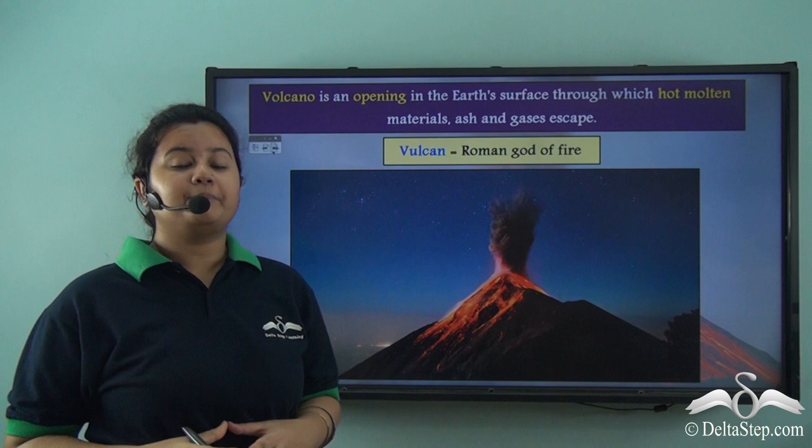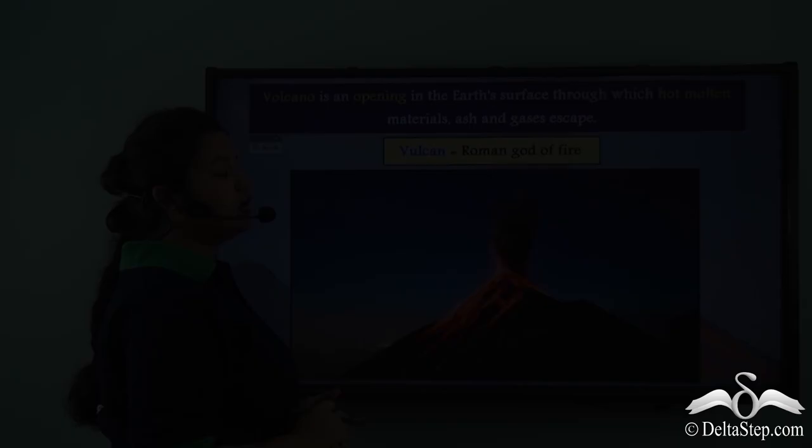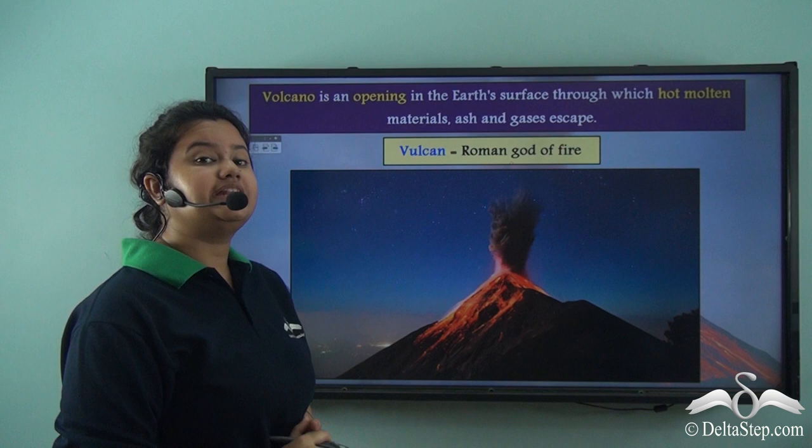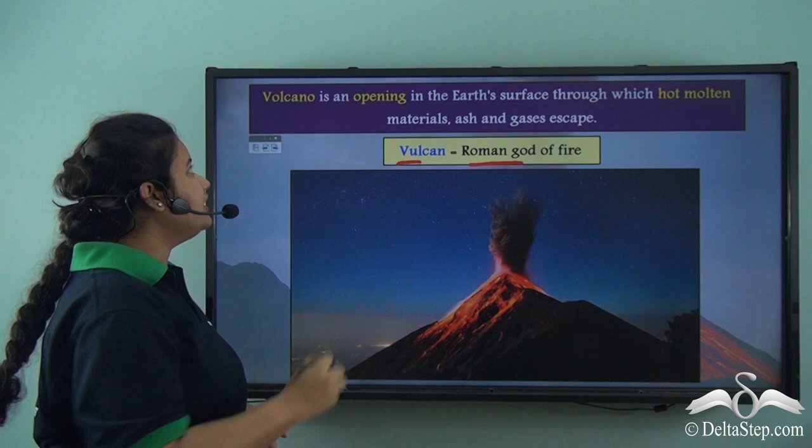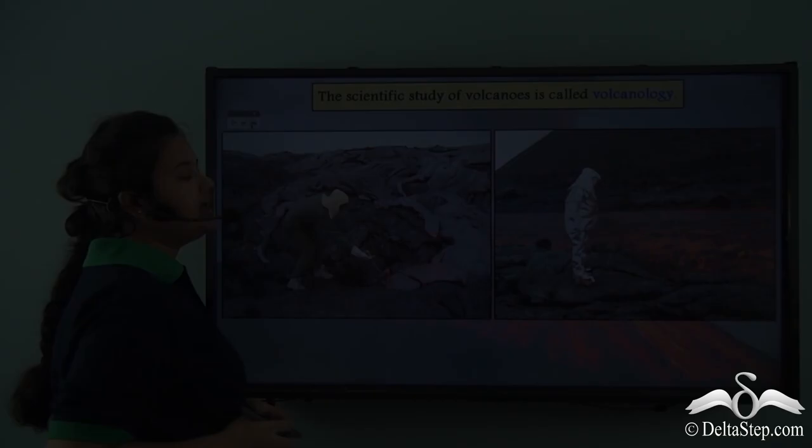Now people in ancient times believed that volcanoes were created by God, or in other words volcano is an act of God. So they named this natural phenomena after Vulcan, who is the Roman god of fire, and hence this natural phenomena is called a volcano.